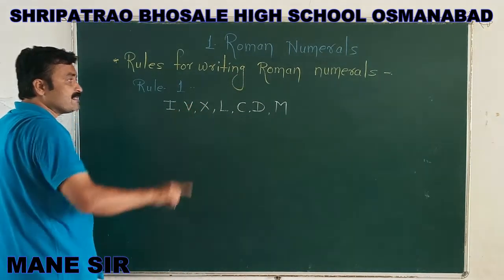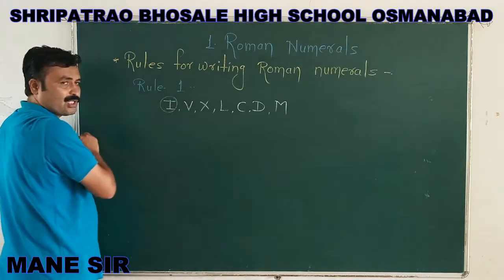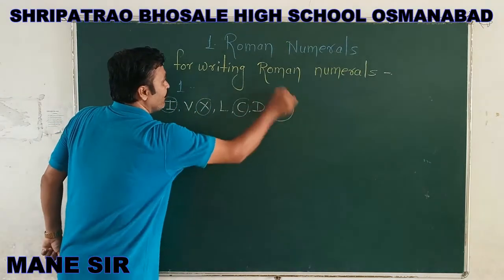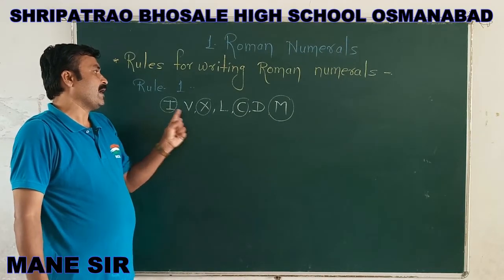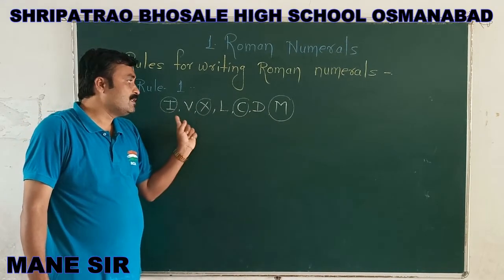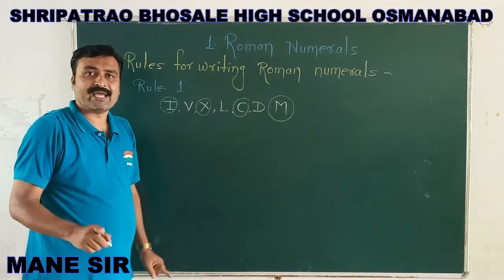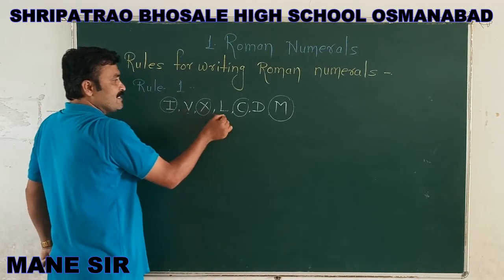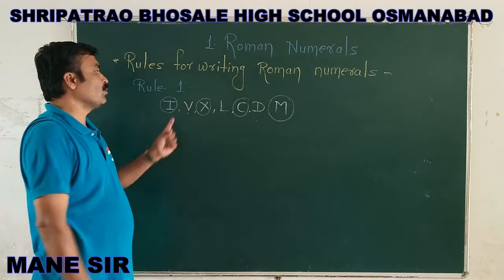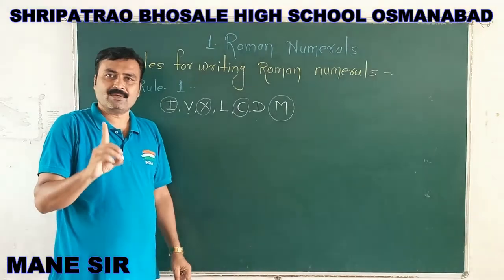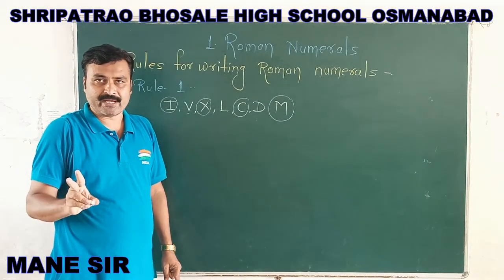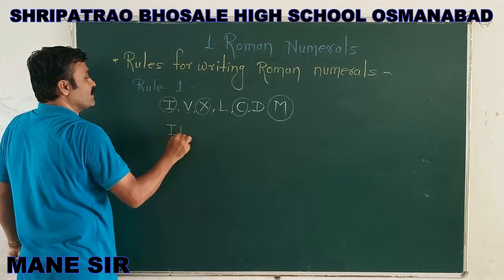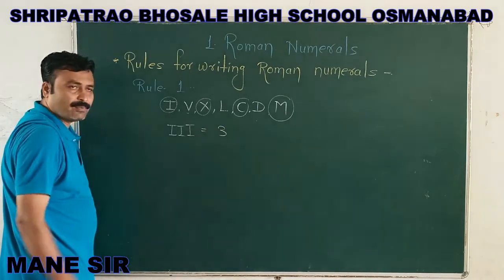Now, out of these 7 basic signs — capital I, capital X, capital C, and capital M — these 4 numerals we can write 3 times continuously. The remaining 3, that is V, L, and D, these 3 Roman signs we can write a maximum of 1 time only. We cannot repeat them 2 times or 3 times. So, if you write capital I three times continuously, it represents the international number 3.